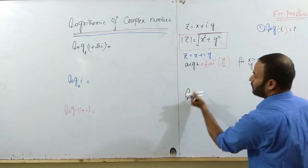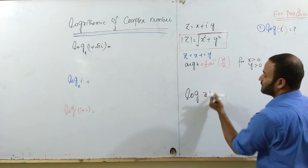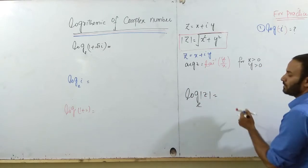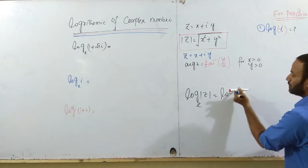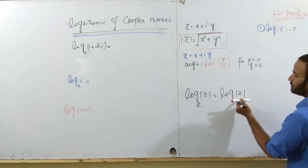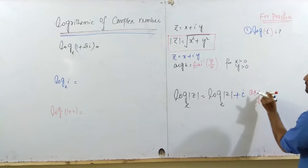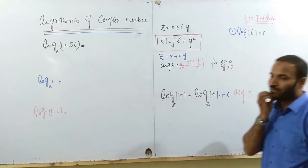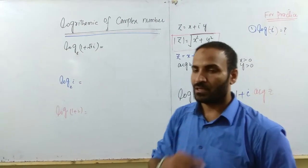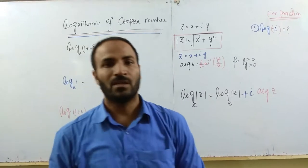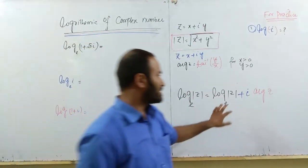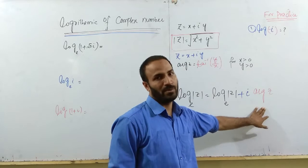What is the definition? The log of any complex number is equal to log of the magnitude plus iota times the argument of z. Whenever you want to find out the logarithm of a complex number, you need to find out two things: magnitude and argument.